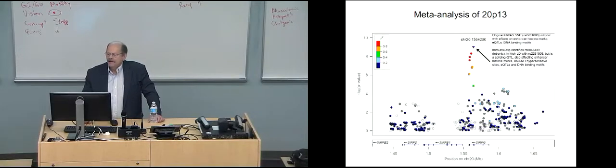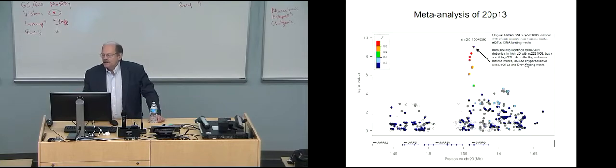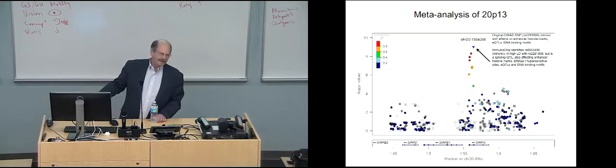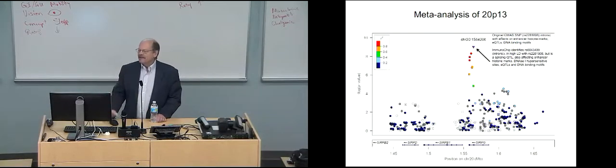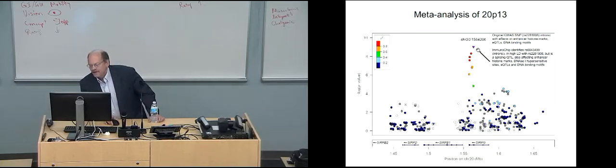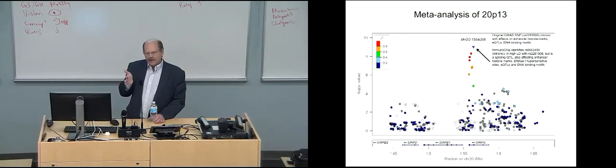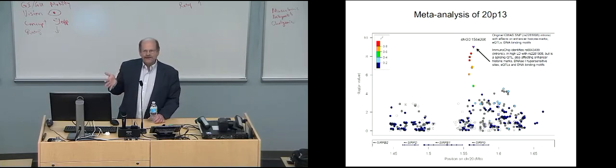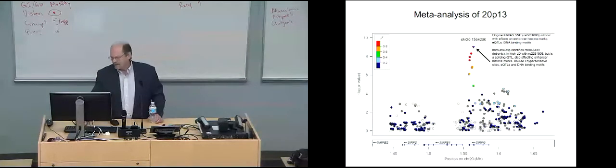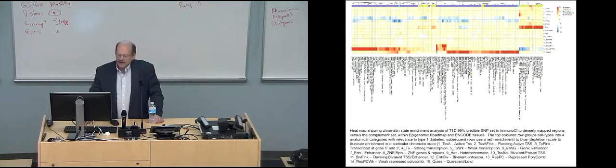The initial SNP was intronic with effects on enhancer histone marks, eQTLs, DNA binding motifs. But the Immunochip analysis, which is this SNP, is actually one that's in high LD with the original SNP. But it also is affecting enhancer histone marks, DNA1 hypersensitive marks, as well as eQTLs and DNA binding motifs. So, they both make some sense. But the actual SNP that is most associated is this one. This is a way of actually not only saying, now we know where the SNPs lie and which gene, but it actually gives us a better idea of what's the most important SNP that might be there.